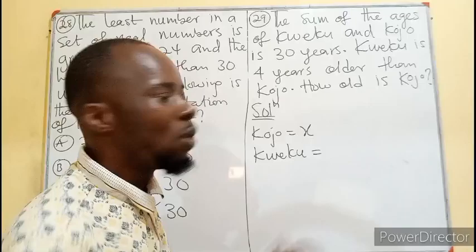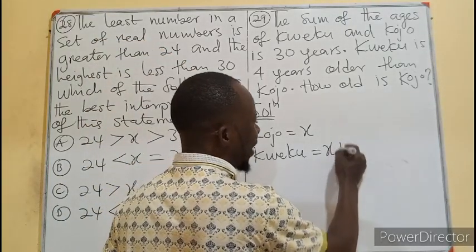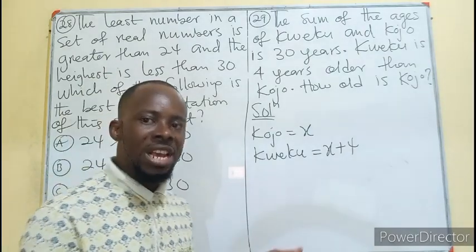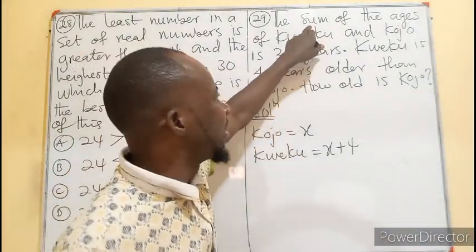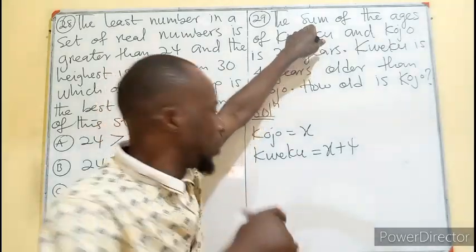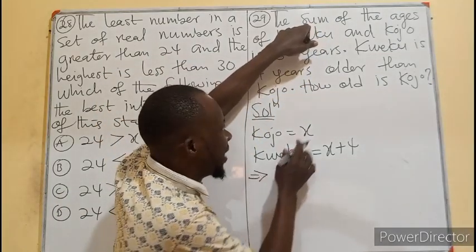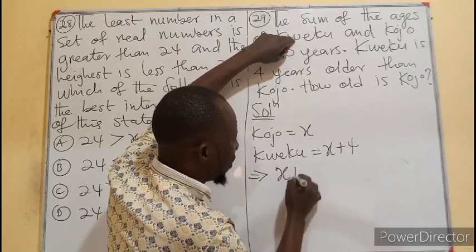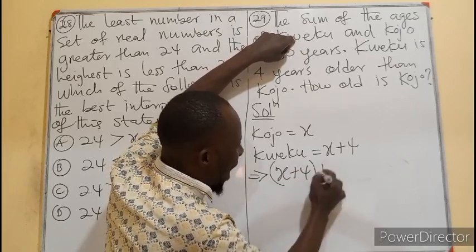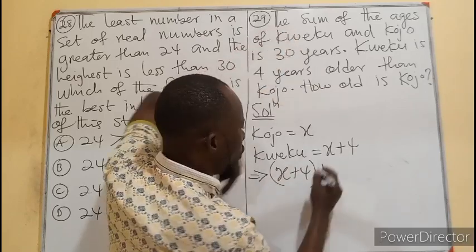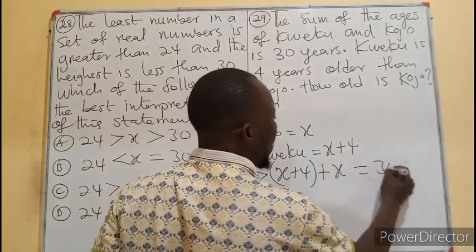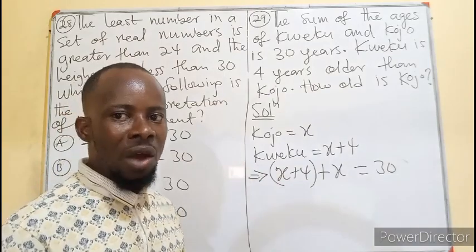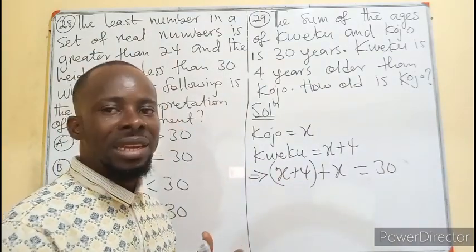If Kojo is x, then we expect Kweku to be—they say Kweku is four years older than Kojo—so Kweku will be 4 plus x, which is x + 4. Now, the sum of Kweku, which is x + 4, plus Kojo, which is x, must give us 30 years.